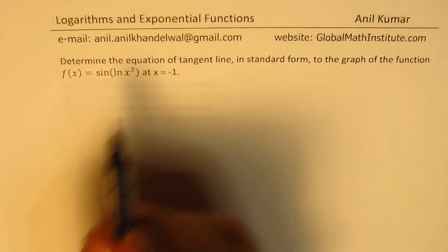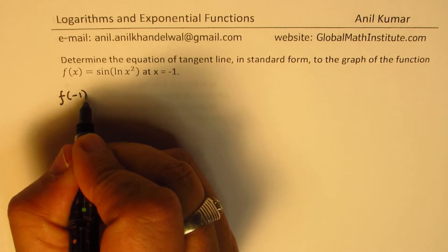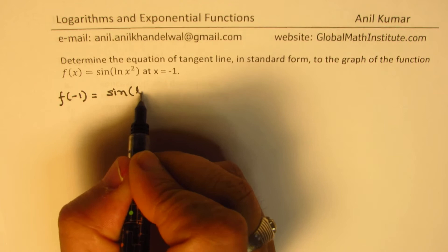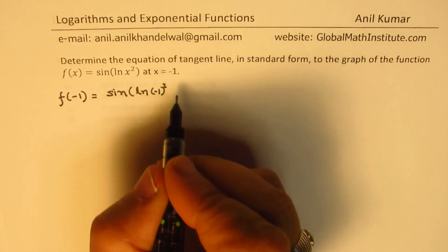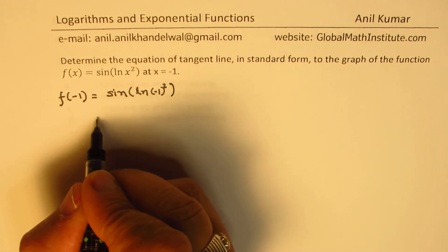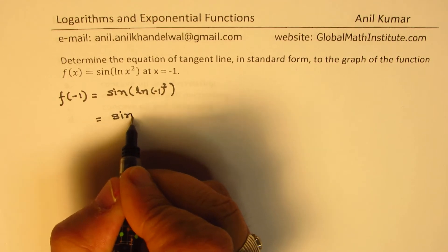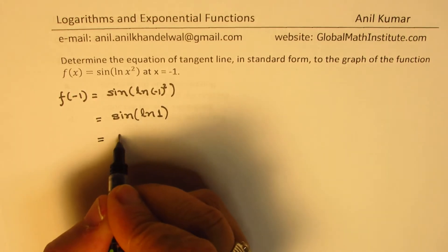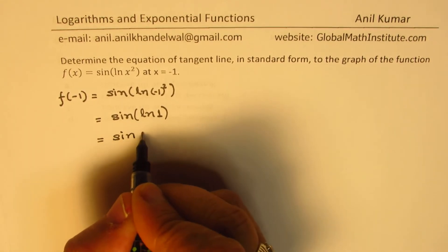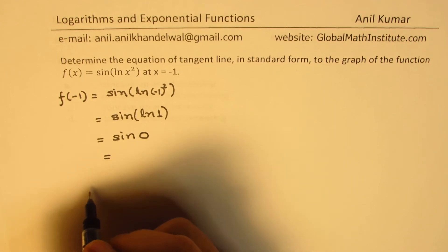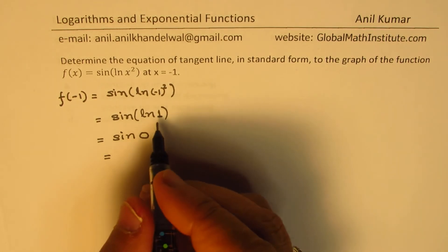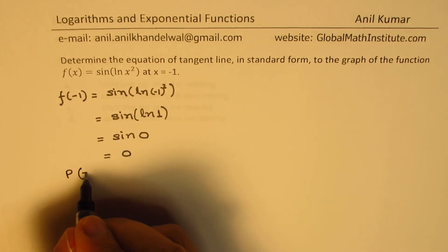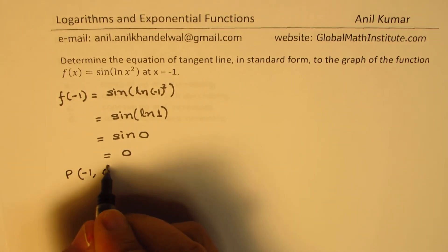We are given x equals minus 1. Let's find the value of the function at minus 1. We get sine of ln(minus 1 squared), which equals sine of ln(1). Since ln(1) is 0, we get sine of 0, and sine of 0 is also 0. So the point is (minus 1, 0).